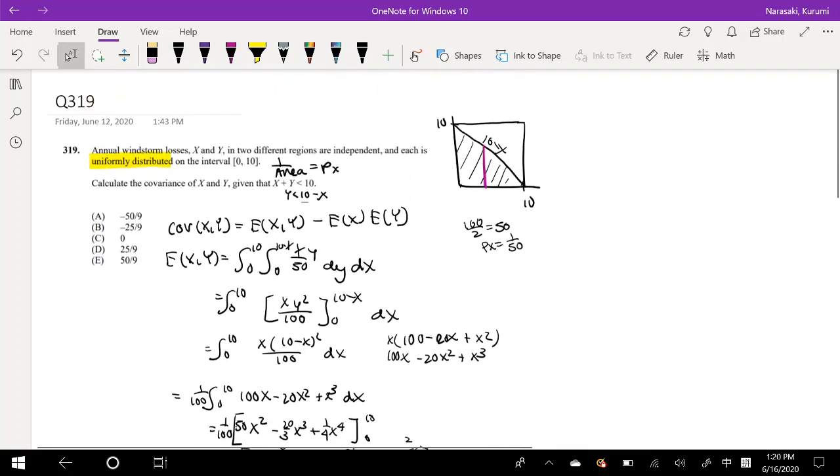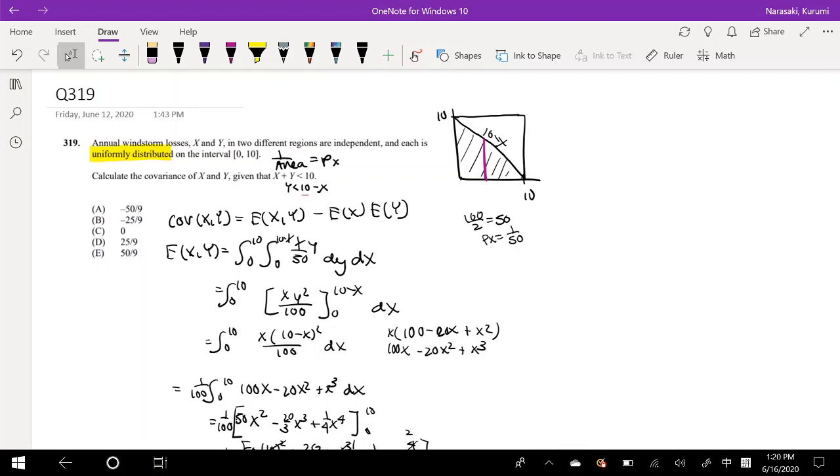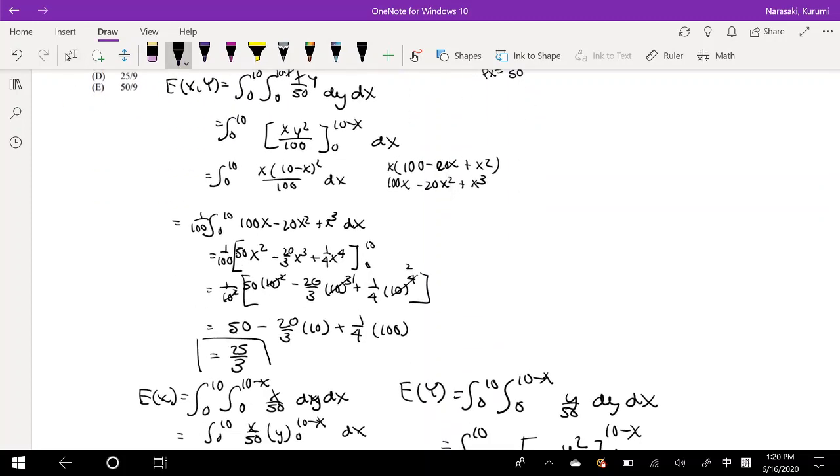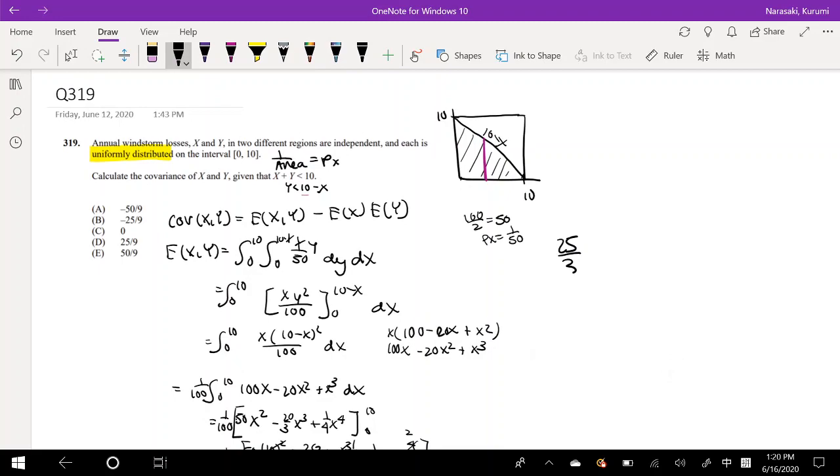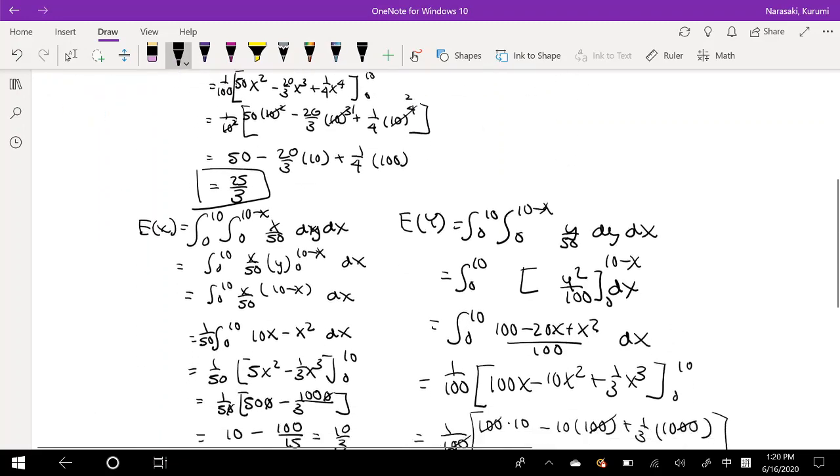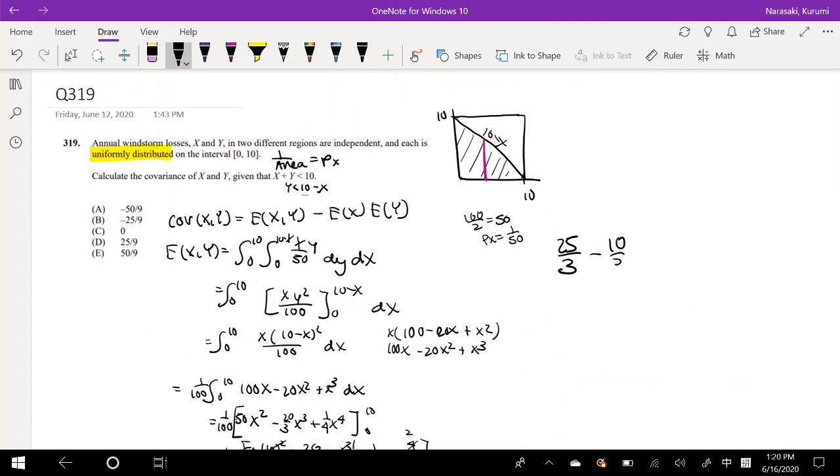So we have all the ingredients we need going back here. So in order to find our covariance, we need E(xy), which we found to be 25 thirds. So 25 thirds minus E(x), which we found to be 10 thirds times 10 thirds. This is our covariance, by the way. Which is equal to 25 over 3 minus 100 over 9. Solve that out. Punch it into my calculator, my handy handy calculator. And we get negative 25 over 9, which is your answer in B.